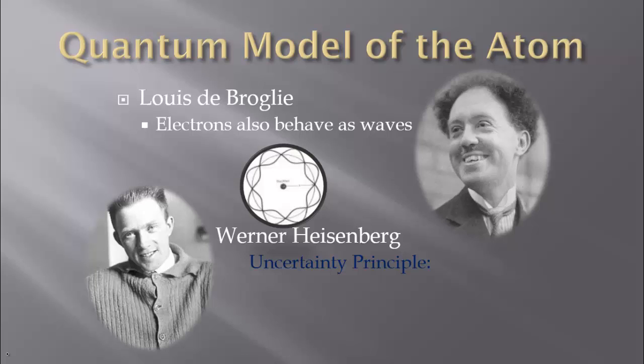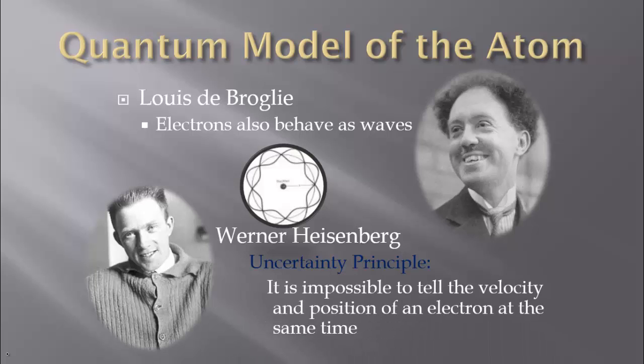Heisenberg adds to this with his uncertainty principle. It states it is impossible to tell the velocity and position of an electron at the same time. Let's think about if we have a person walking around the room. We could say how fast they were walking — measure their velocity, find out how much energy they're exerting. We could look at them moving around the room. However, if we wanted to know where they were at any particular second, we wouldn't be able to do that because they are constantly moving. We can give an idea of where they're moving, an idea of how big the circle is that they're walking in. But we wouldn't be able to tell you exactly where they are located. If we wanted to find that out, we would actually have to stop that person and say they are in this spot at this time — but at that time, they would have no velocity.